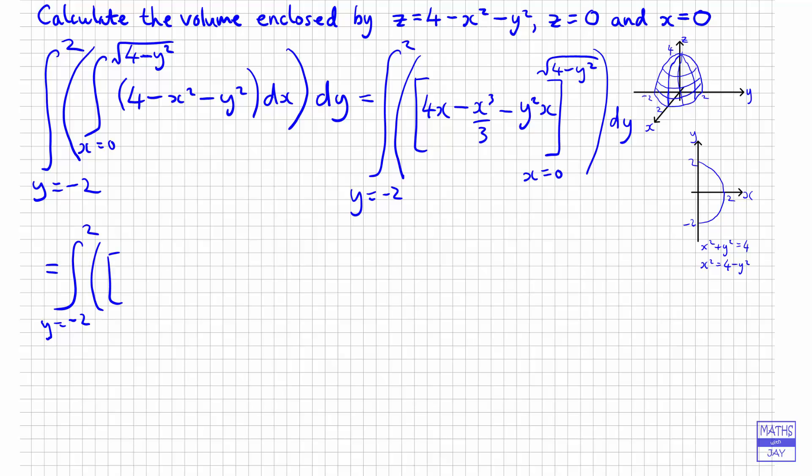So we will have y equals minus 2 to 2. And what we could do, just to neaten this up a bit, if we take the x outside the bracket, we've got 4 times x, but we've also got minus y squared times x. So we'll have x times 4 minus y squared minus x cubed over 3.